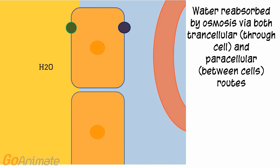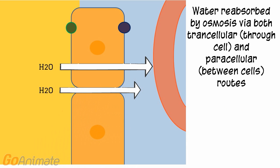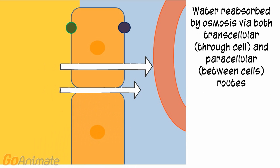Water is also reabsorbed by osmosis. The sodium gradient works to produce an osmotic pressure to pull water out of the tubule. Water also moves between cells via the paracellular route.